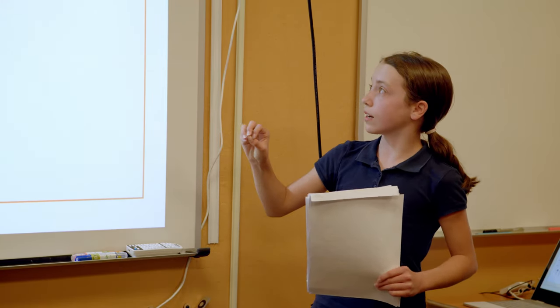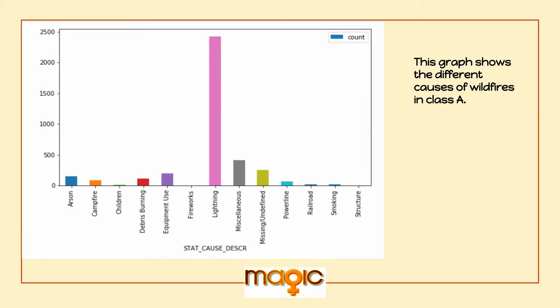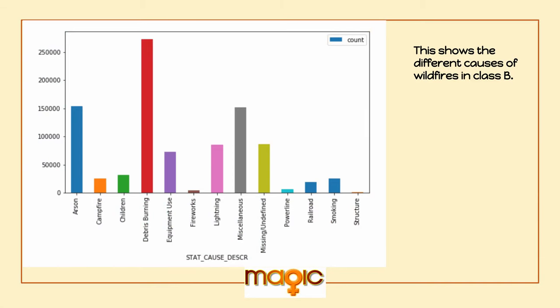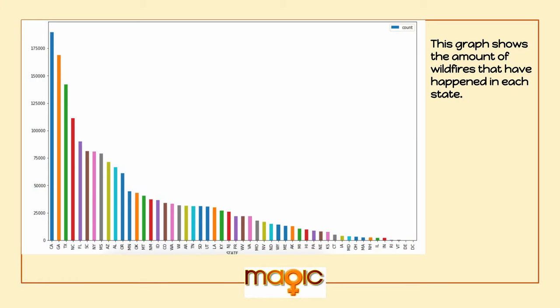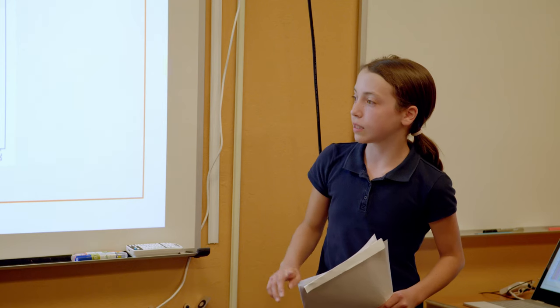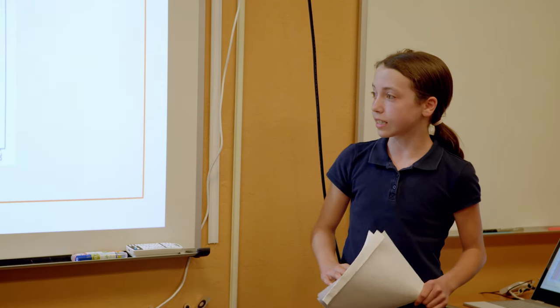And this graph shows the different causes of wildfires in class A, and the largest cause is lightning. And then the different causes in class B, which is debris burning. And lastly, this graph shows the amount of wildfires that have happened in each state. In California, there have been the most wildfires in these past 10 years, then Georgia and Texas.